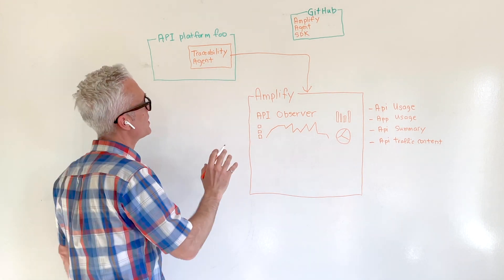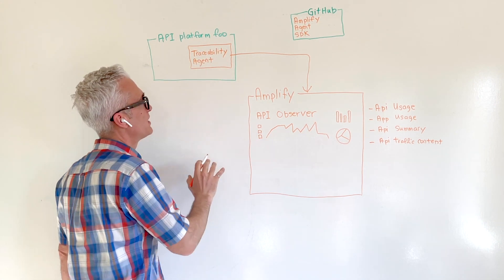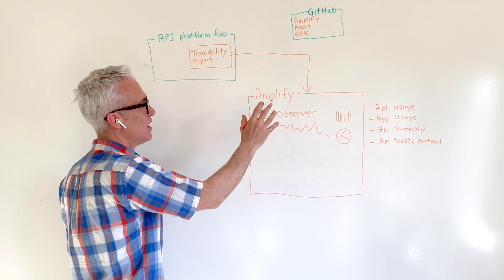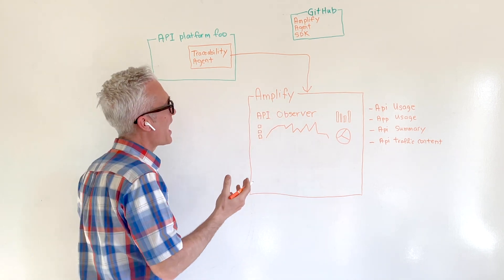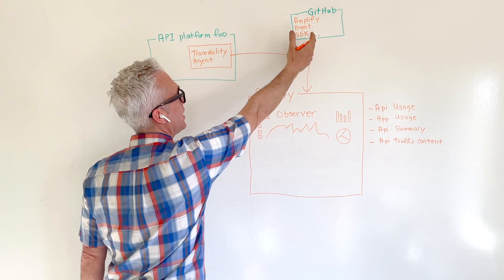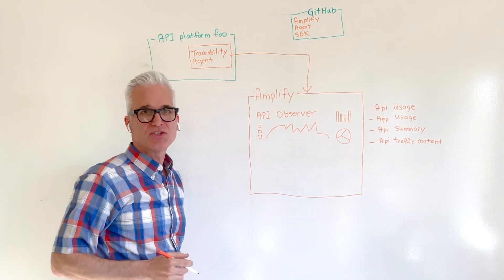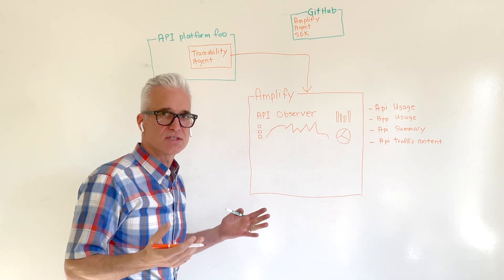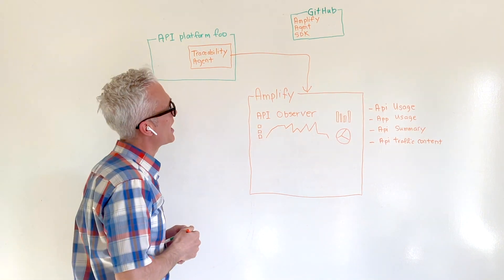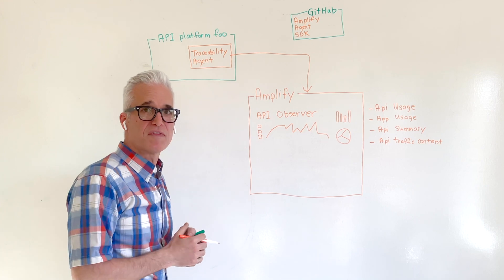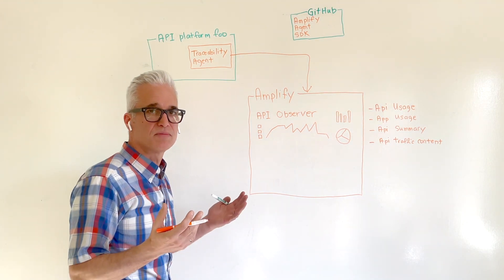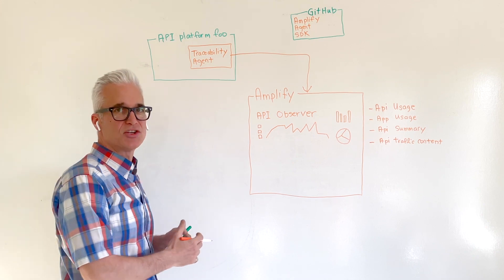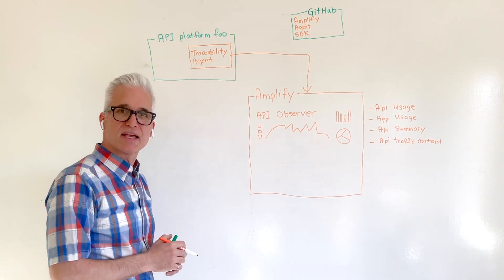So this is open because that communication between these traceability agents and API Observer is all standards-based. But in addition to that, Amplify has an open source Amplify agent SDK on GitHub. So although some agents are provided out of the box by Amplify, there are also Amplify agent examples built by a community of developers, and you can build your own Amplify agent using this open source SDK.